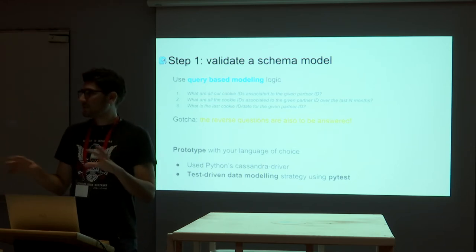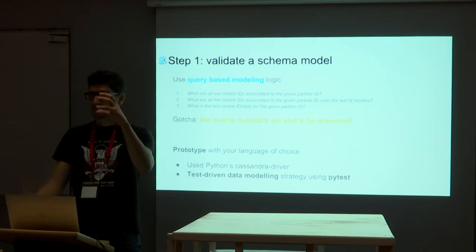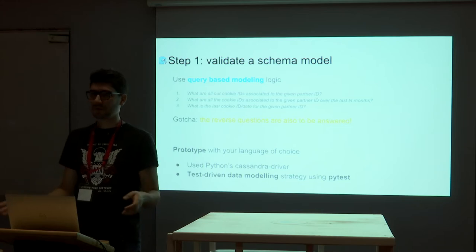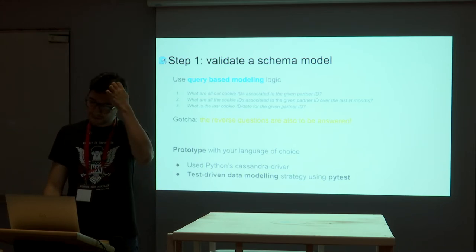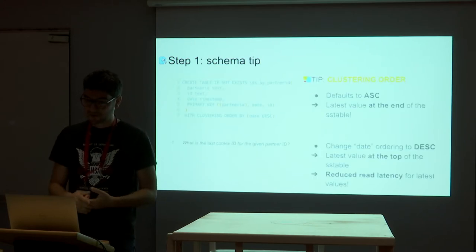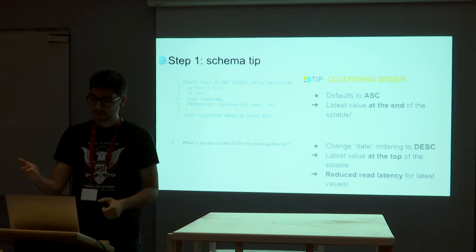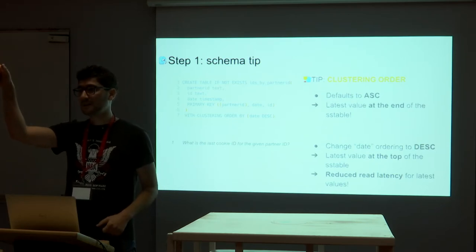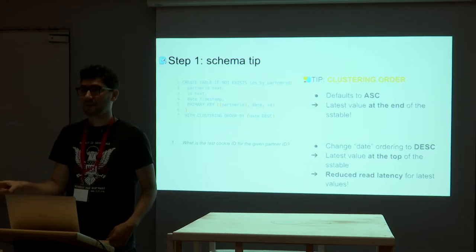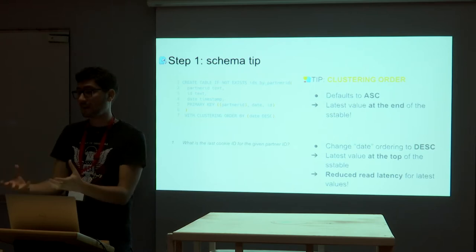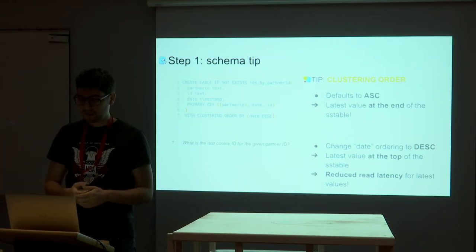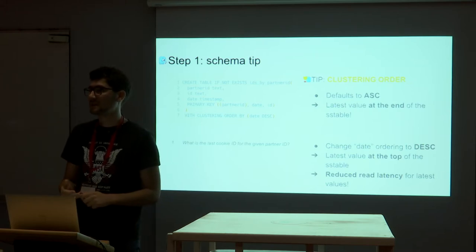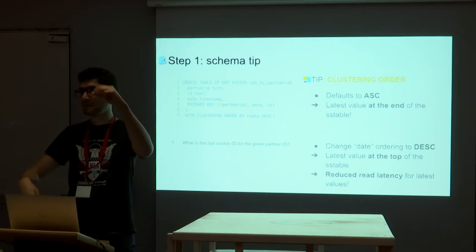Maybe you're not all used to Cassandra, but I will share some internal tips I got along the way. One of the first tips was on the schema and clustering order. The clustering order in Cassandra and ScyllaDB defines how data is sorted when it's stored on disk — in SS table files. The way it's sorted depends on the clustering order. By default it's ascending, meaning the latest value is at the end of the file.